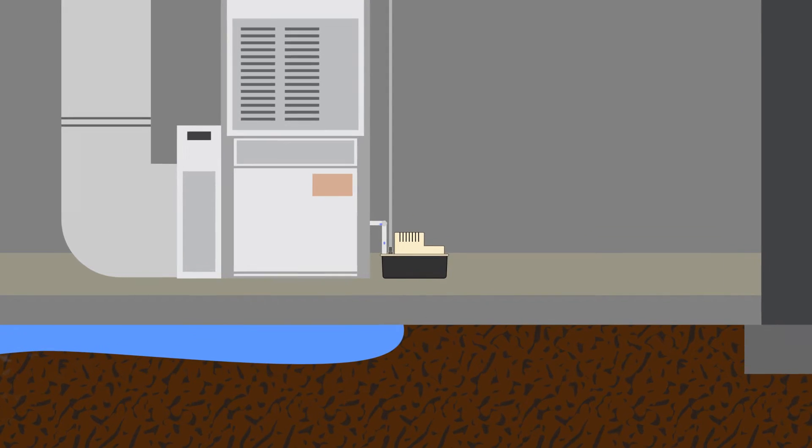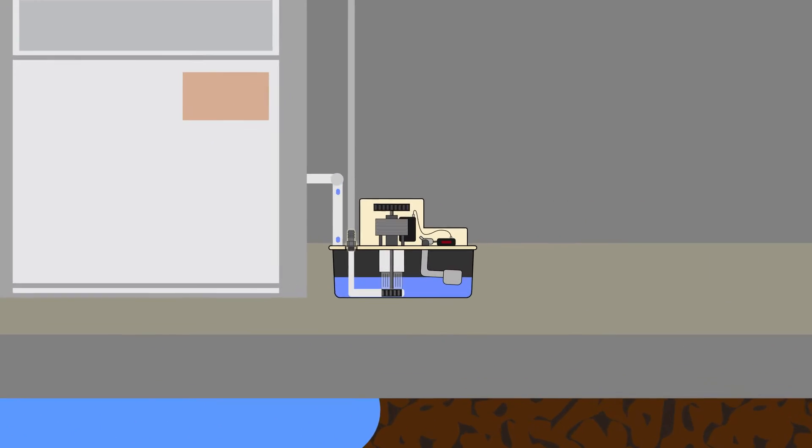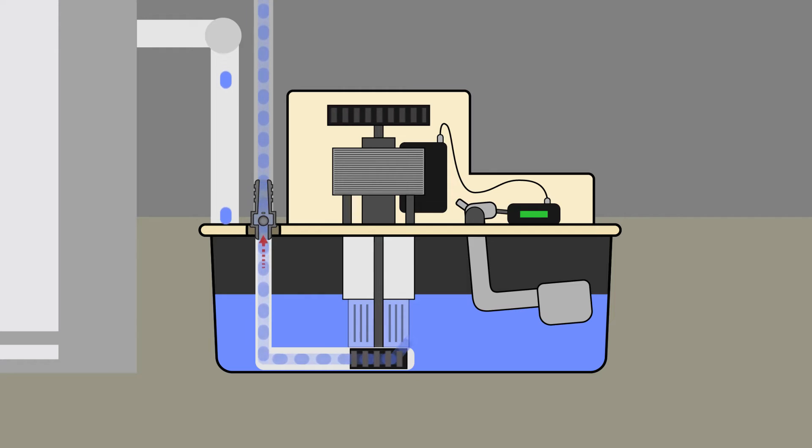Condensate pumps use a check valve with a loose plastic ball inside. The principle is the same as other check valves.